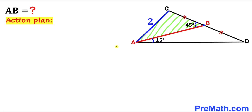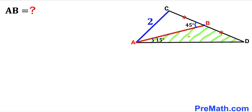Here's our action plan. Since we are interested in calculating side AB and we know this side length AC is 2, we are very much interested in triangle ABC. We are going to calculate angles BAC and ACB.